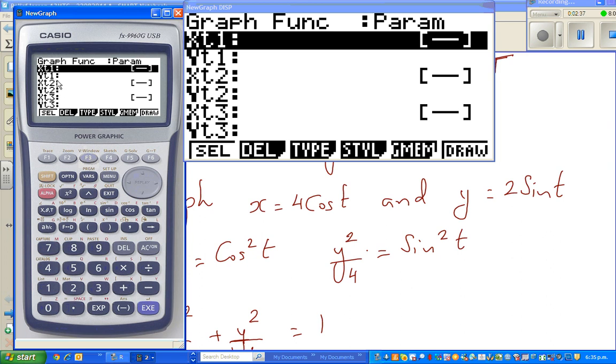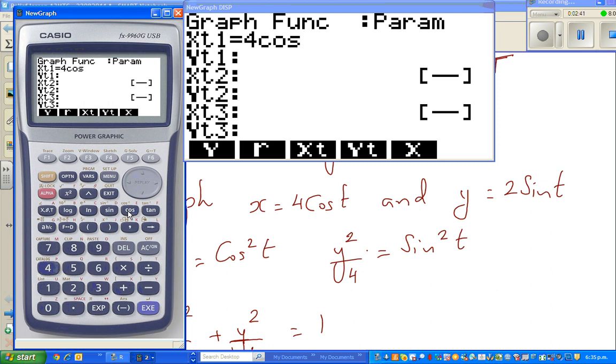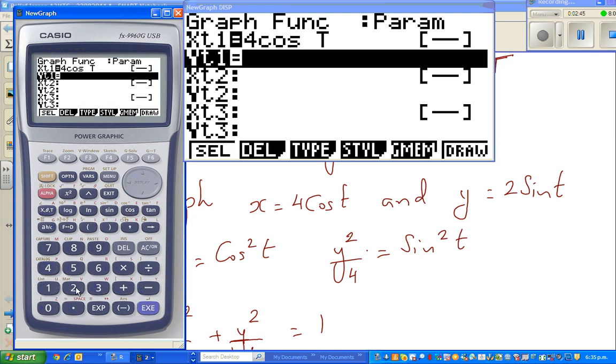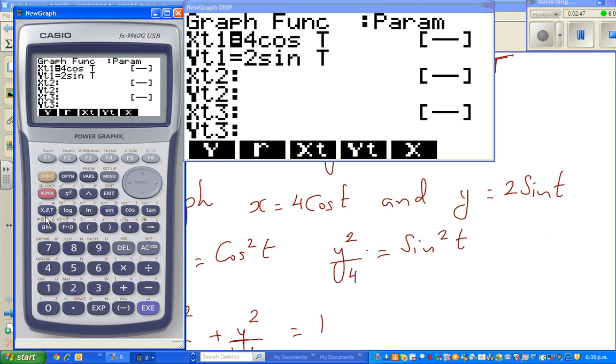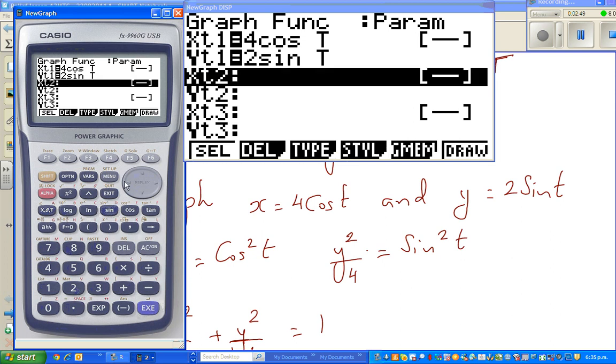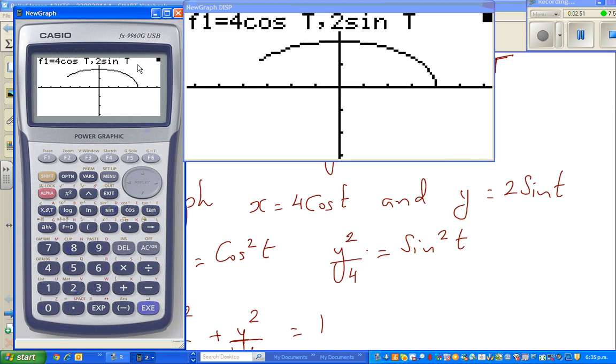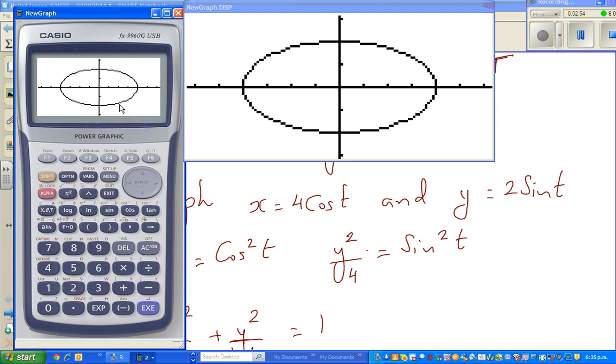So they ask me what is x t1. So my x t1 is 4 cos t and my y t1 is 2 sin t. Just like that and then graph it f6. So you can see an ellipse. But the problem with this is it will not tell you. You can only see from this that the major radius is 1, 2, 3, 4 and the minor radius is 2.